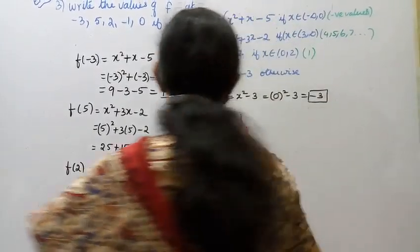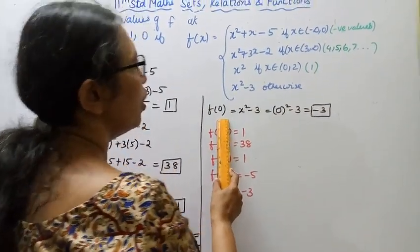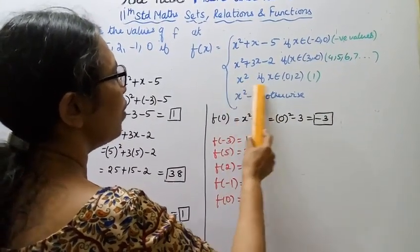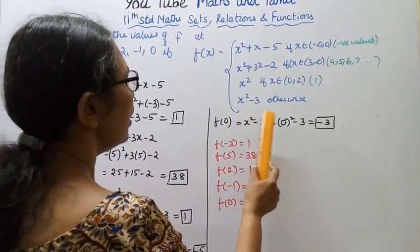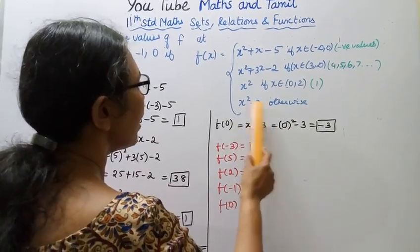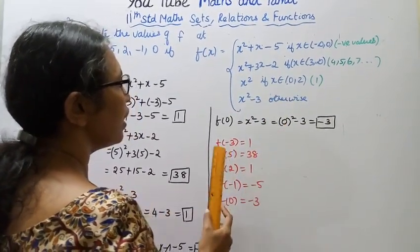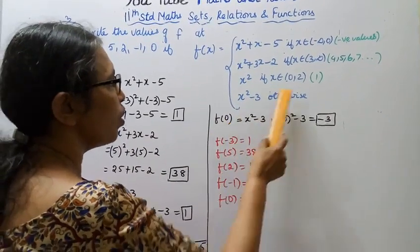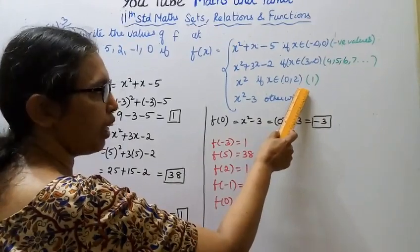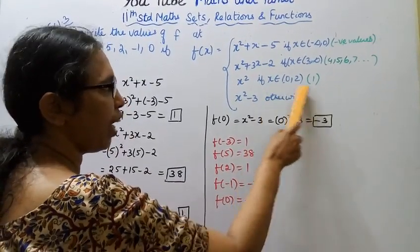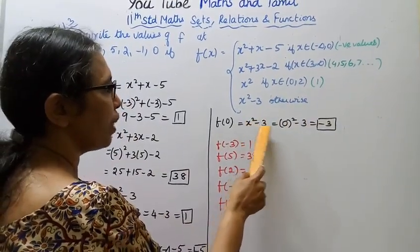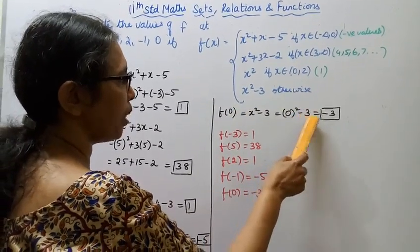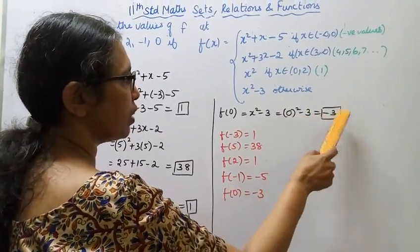f of 0: 0 belongs to the otherwise case, so we use x squared minus 3. Substituting x equals 0: 0 squared minus 3 equals 0 minus 3 equals minus 3.